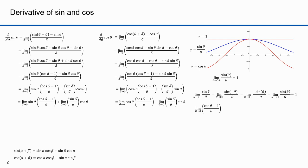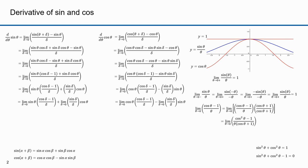Now I'll determine the limit as theta approaches zero of cosine theta minus one over theta. I'll multiply that by cosine theta plus one over cosine theta plus one, which is essentially multiplying by one. In the numerator, cosine theta minus one times cosine theta plus one is cosine squared theta minus one. In the denominator, I have theta times cosine theta plus one. Recall that sine squared theta plus cosine squared theta equals one, so cosine squared theta minus one equals minus sine squared theta. I can make that substitution.